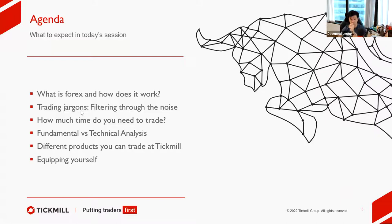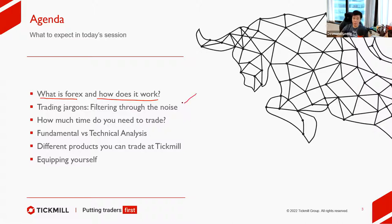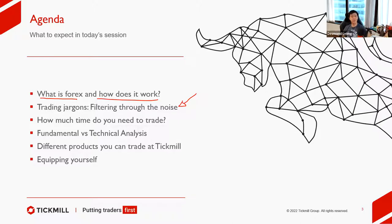Here's the agenda for today. First, what is forex and how does it work. Later I'll cover trading jargons — how to filter through the noise. I like to keep things simple. Trading jargons like hawkish, dovish, risk-on, risk-off, safe-haven assets — sometimes these overcomplicate simple stuff. I'm going to break them down for you. If there are jargons you're unfamiliar with, send them through and I'll try to explain them.